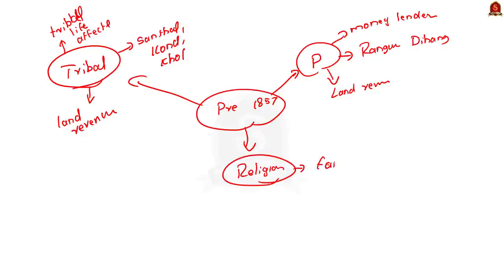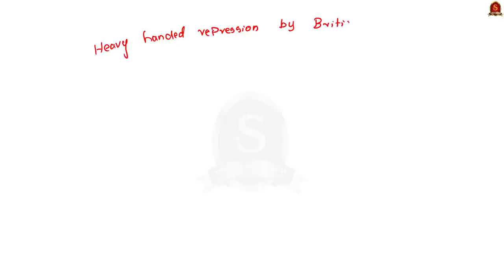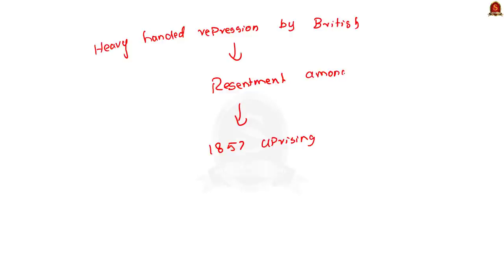The third type of uprising was of religious nature — you can mention the Faraizi Movement and the Sanyasi Rebellion. The British interfered with the religion of the people and also supported the work of Christian missionaries, which angered the people. In all these cases, the British quelled the rebellion with a heavy hand. So there was general resentment against the British from all sections of society — from tribals to peasants to religious people — and this general resentment resulted in the 1857 uprising.